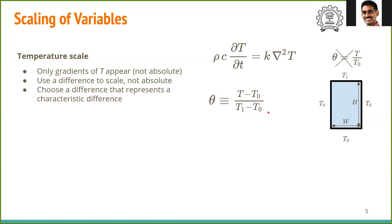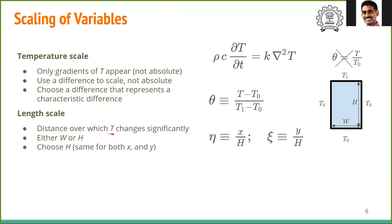For the length scale, we have to find the distance over which T changes significantly. In this case, the maximum variation of T is from T₀ to T₁ or the maximum difference is T₁ - T₀. Along the vertical direction at the middle, T goes from T₀ to T₁ over a distance H. Along the horizontal direction near the top, the temperature changes from T₀ to T₁ over a distance W/2. So we can choose either W or H as our length scale.